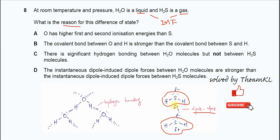Now the answer is very clear. It's not A, because it's ionization energy. For B, the covalent bond between O and H is stronger. This is not about covalent bonds in the molecule, it's between the molecules. That's why B is also not the answer. C, there is a significant hydrogen bond between H2O, but not H2S. This is the answer.